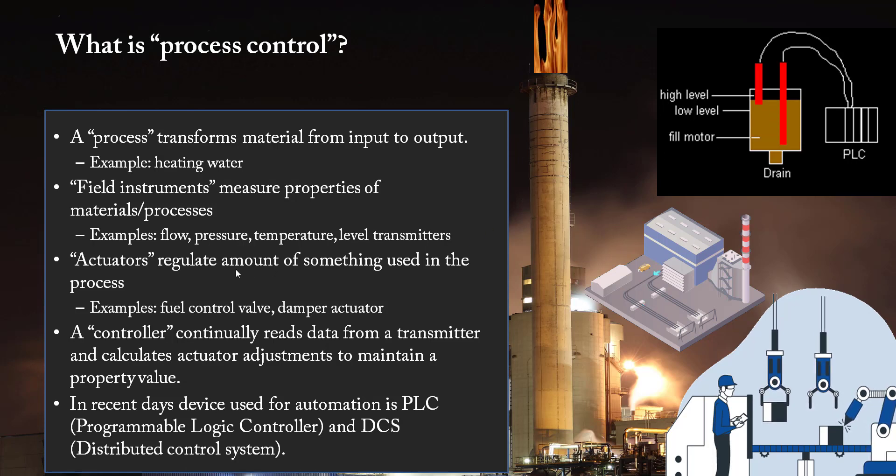So now controller. Controller continuously reads data from transmitter and calculates adjustments. Like you see the brain function in human body, same is a controller function in process automation. So controller is actually reading the values of transmitters or instruments and calculates the adjustment to maintain the desired process requirements. For automation, in recent days we are using PLCs and DCS systems for process automation. So what is the PLC and what is the DCS? There would be a small video coming up. So in this series you are going to learn the basics of process automation.